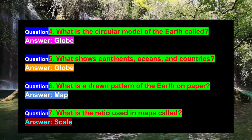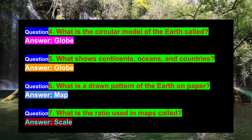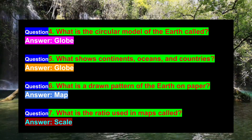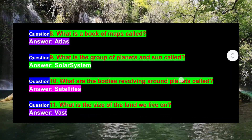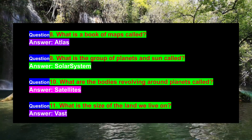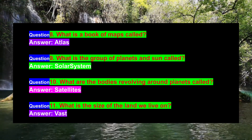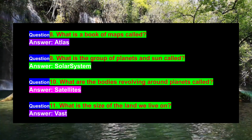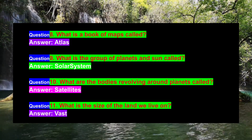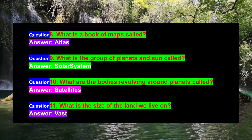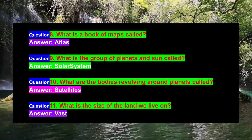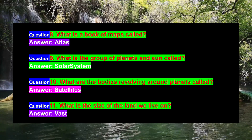Question 7: What is the ratio used in maps called? Answer: Scale. Question 8: What is a book of maps called? Answer: Atlas. Question 9: What is the group of planets around the Sun called? Answer: Solar System.